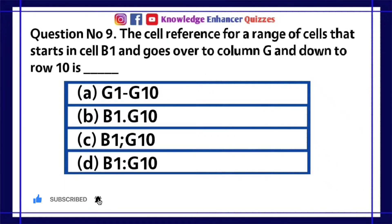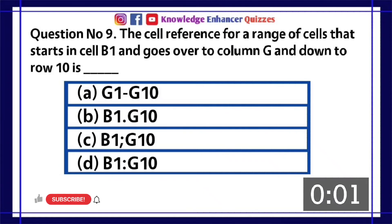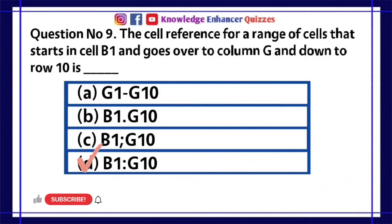Question number 9: The cell reference for a range of cells that starts in cell B1 and goes over to column G and down to row 10 is dash. A. G1-G10  B. B1.G10  C. B1;G10  D. B1:G10. Option D is the right answer.